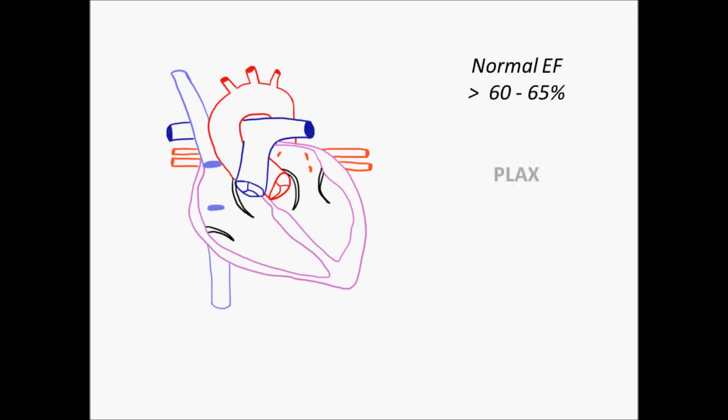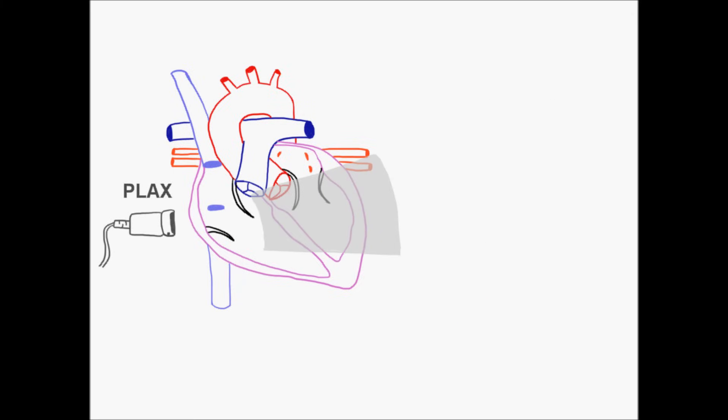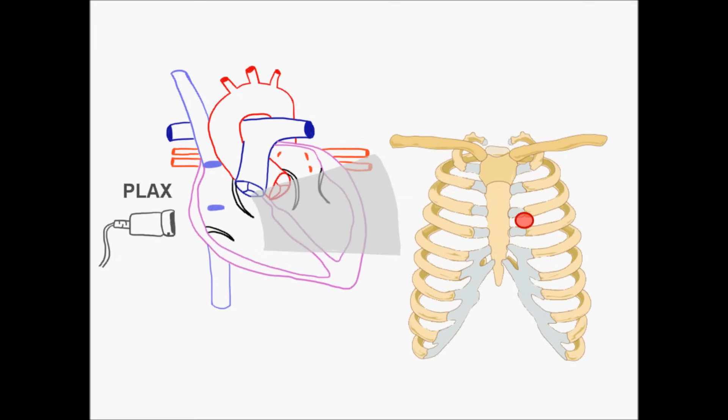We should use three views for the visual assessment method: the parasternal long axis, the parasternal short axis, and the apical four-chamber view. Going over these in detail is beyond the scope of this presentation, but the Sonosim site is a great resource for learning how to perform them. Let's take a look at the normal heart in a parasternal long axis view.